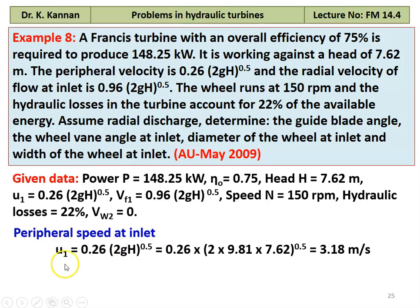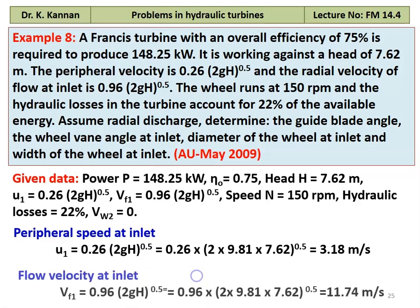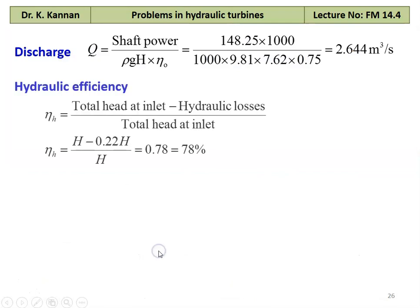Peripheral speed at the inlet: U1 equal to 0.26 into (2gH)^0.5, which is 0.26 into 2 into 9.81 into 7.60 to the power 0.5 equal to 3.18 meters per second. The flow velocity at the inlet: Vf1 equal to 0.96 into (2gH)^0.5, which is 0.96 into 2 into 9.81 into 7.62 to the power 0.5 equal to 11.74 meters per second. And the discharge Q equal to shaft power divided by rho g H into eta overall, which is 148.25 into 1000 divided by 1000 into 9.81 into 7.62 into 0.75 equal to 2.644 meter cube per second.